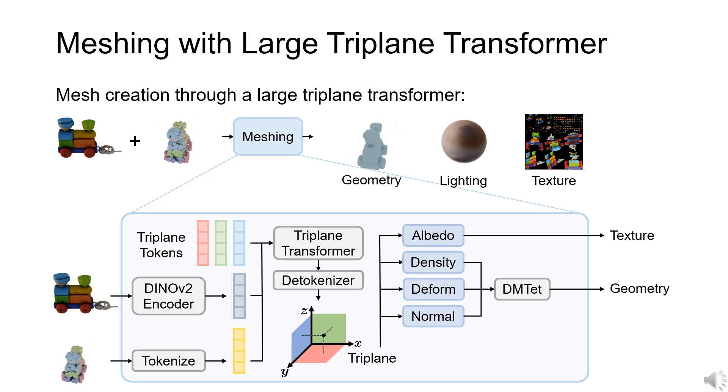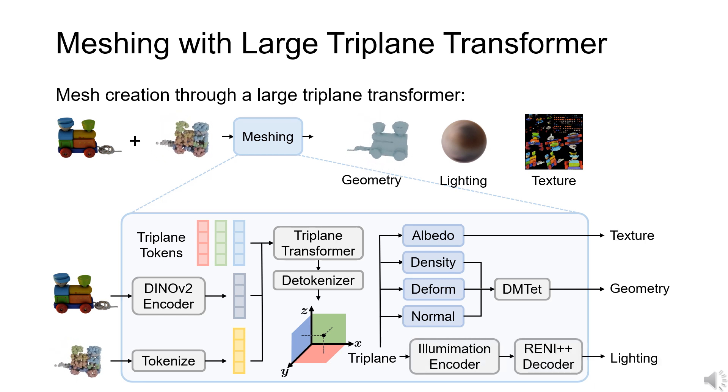The triplane also produces an environment map using the illumination prior from Renni++. The metallic and roughness values are estimated from the image directly and are omitted in this illustration for simplicity.